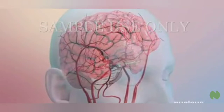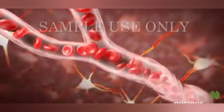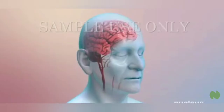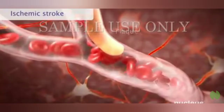Normally, blood vessels called arteries carry blood to the brain. The brain needs constant flow of blood to get the oxygen and nutrients it needs to work properly. During a stroke, also known as a brain attack, blood flow to part of the brain has stopped. The most common type of stroke is called ischemic stroke.